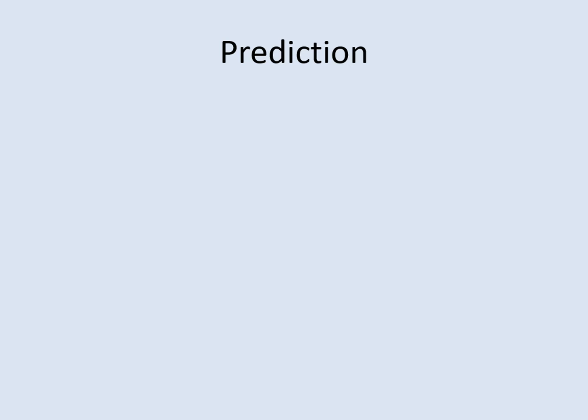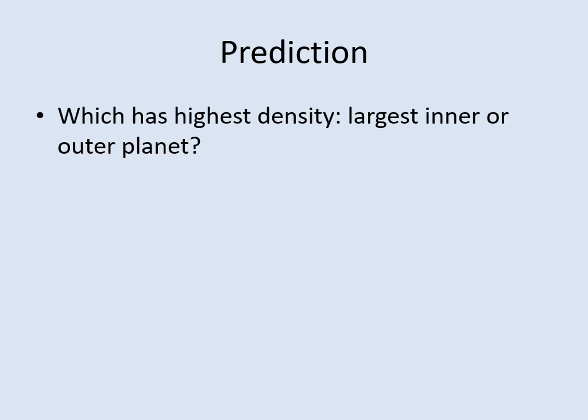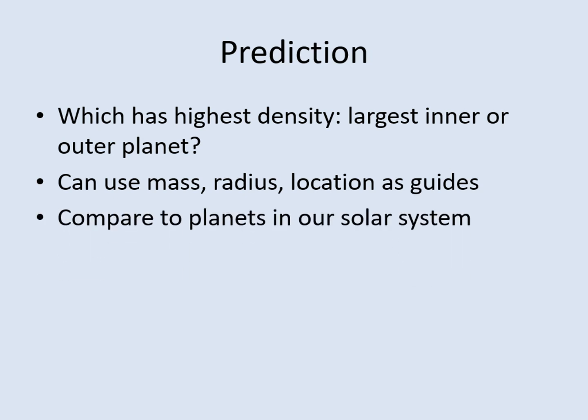The prediction in this question is simpler than some of the others. You're just being asked which of two planets is likely to have the higher density. In general, people focus on the mass, the radius, or the location of the planet to determine which should be more dense. You can also compare to densities of planets in our own solar system to decide what will be most important. The key thing to remember here is that your prediction should have a why component to it. You need to make it clear which piece of information you're basing your prediction on. Also remember that if it turns out that the prediction is wrong, you can correct it in the comparison part of the question.